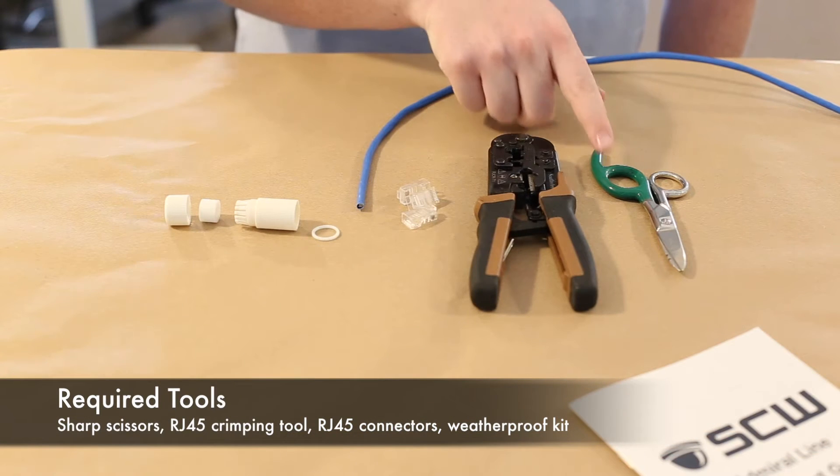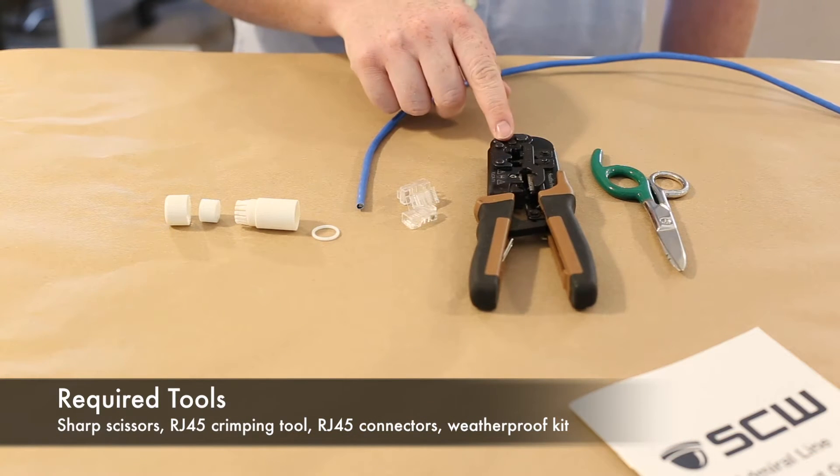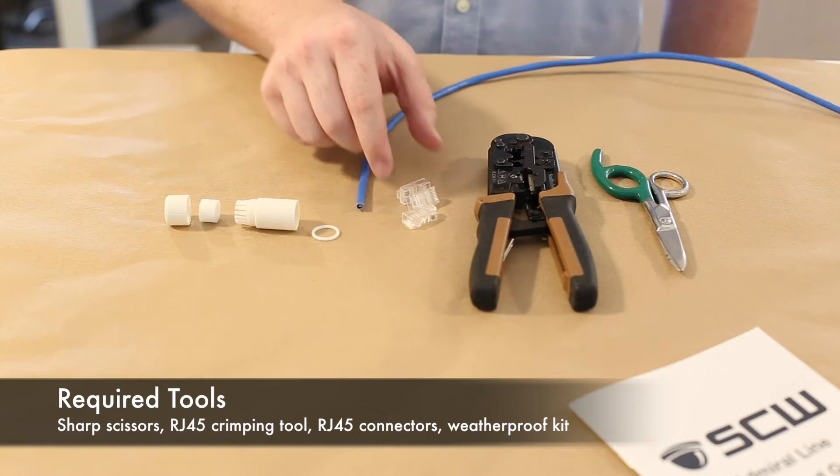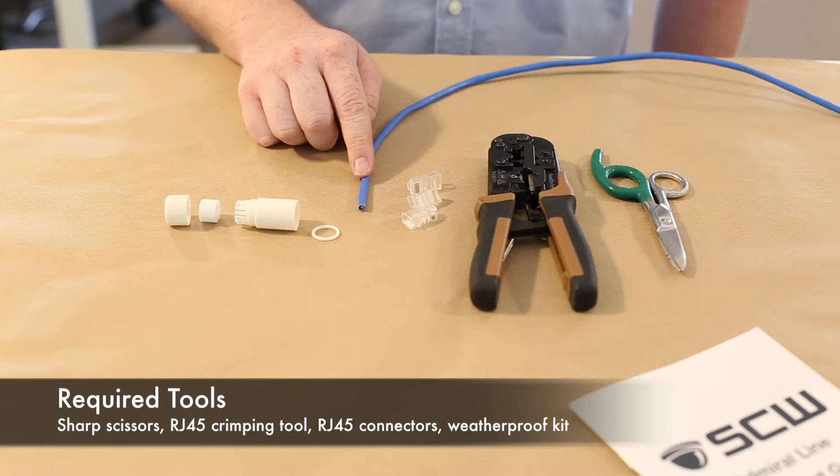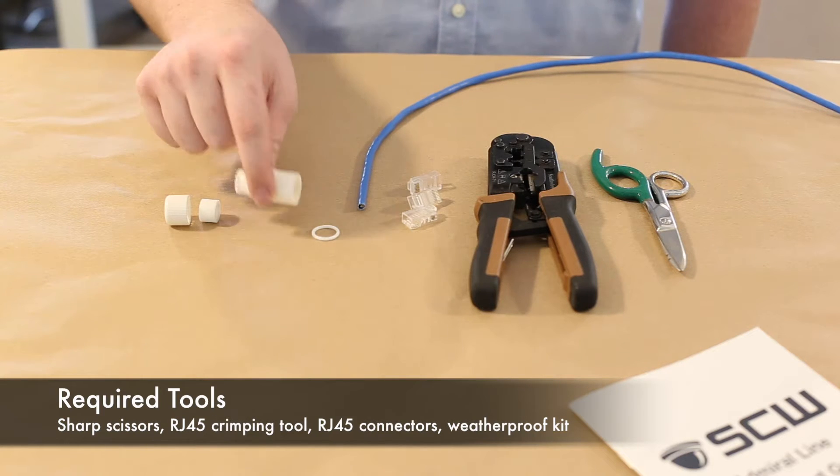To make your own Ethernet cabling you will need a sharp pair of scissors, an RJ45 crimping tool, a couple RJ45 ends, your cat 5 or 6 Ethernet cabling, and a weatherproof connector.